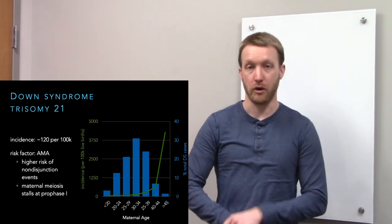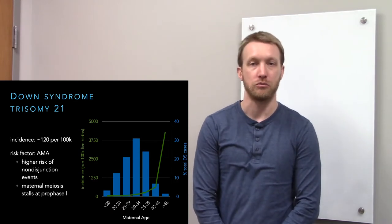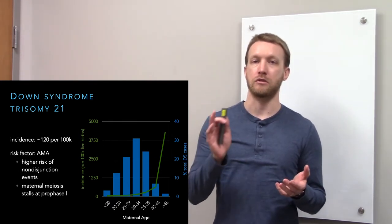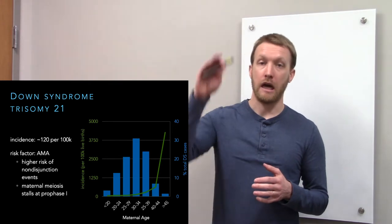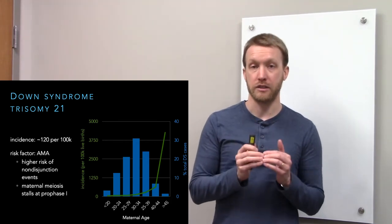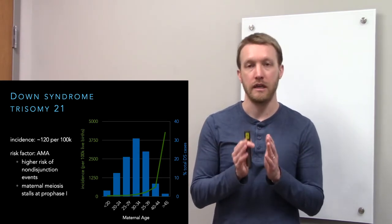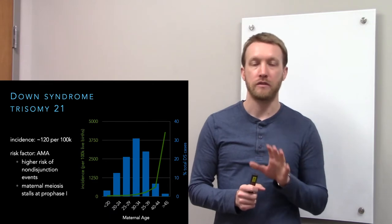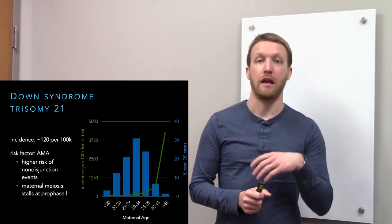However, most births happen with younger mothers, not older mothers. The blue bars are showing us the proportion of Down syndrome cases across maternal age groups. The peak is between 30-34 years old. Even though they have a lower risk per live birth than older mothers, there's simply a greater proportion of births within that maternal age group. Advanced maternal age is a risk factor, but it's not the case that the majority of cases are coming from older mothers because very few people have children after the age of 45.